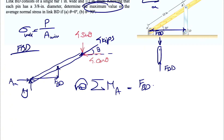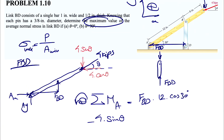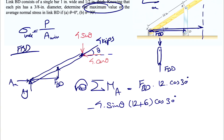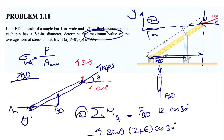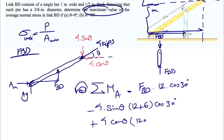The moment of F_BD uses distance 12 cosine 30°. For the four sine theta component, it makes a clockwise moment — so negative four sine theta — and the distance is 12 plus 6 times cosine 30°. The four cosine theta component makes a counterclockwise moment — positive — and the distance is 12 plus 6 sine 30°. Setting the sum of moments equal to zero.